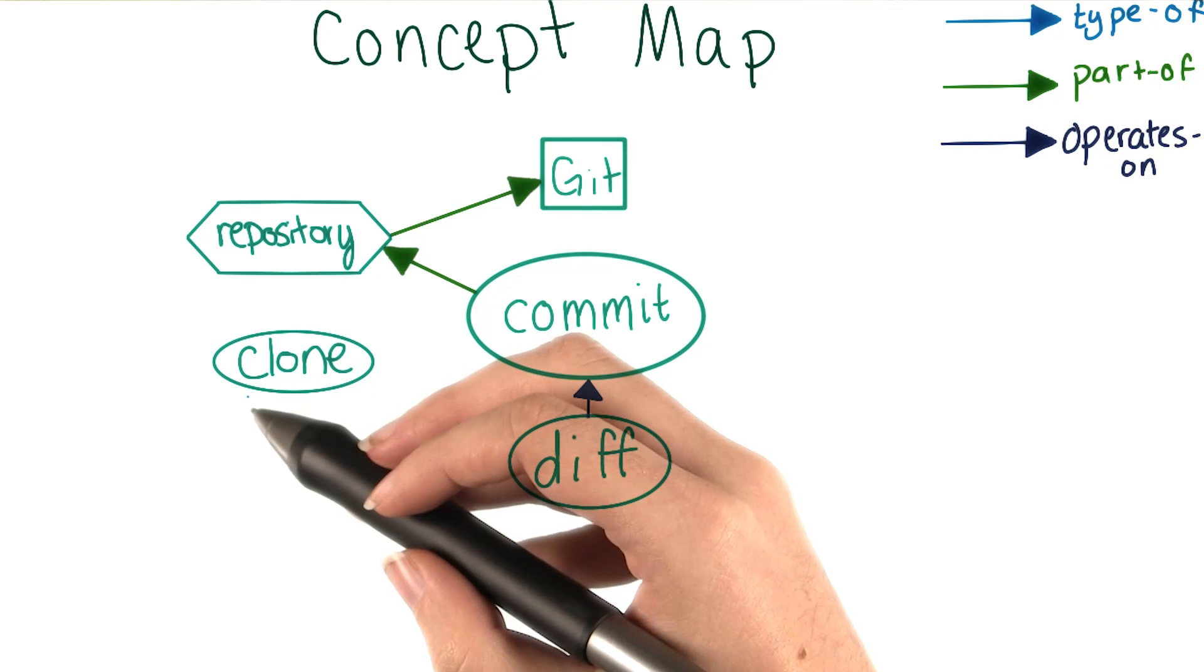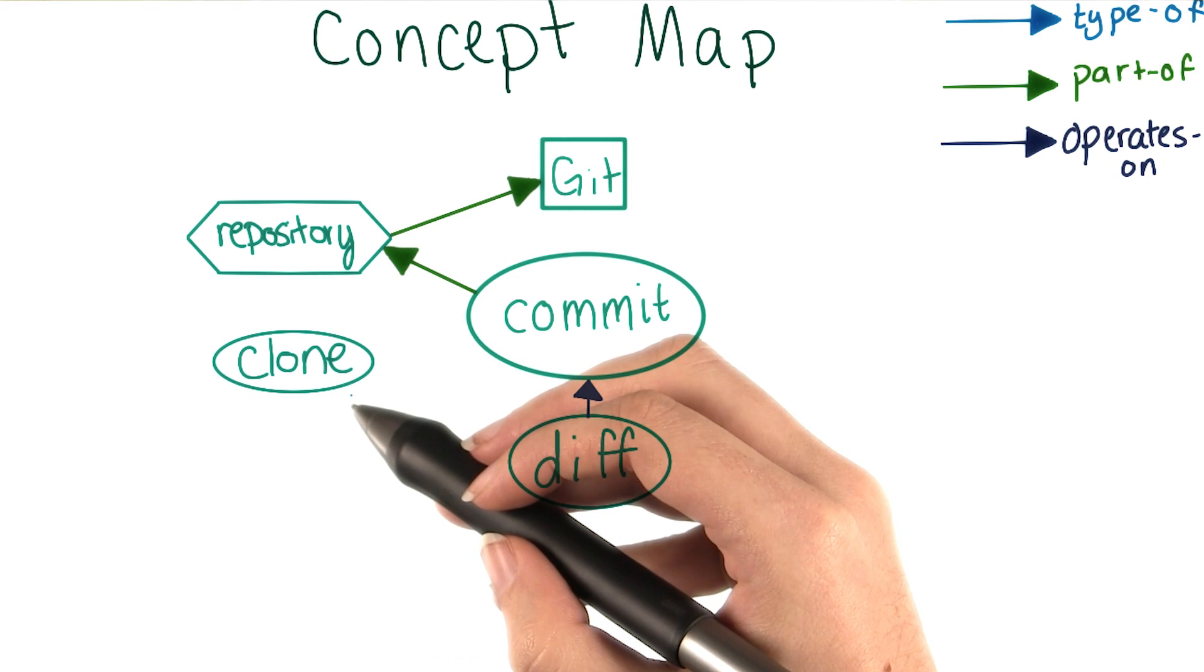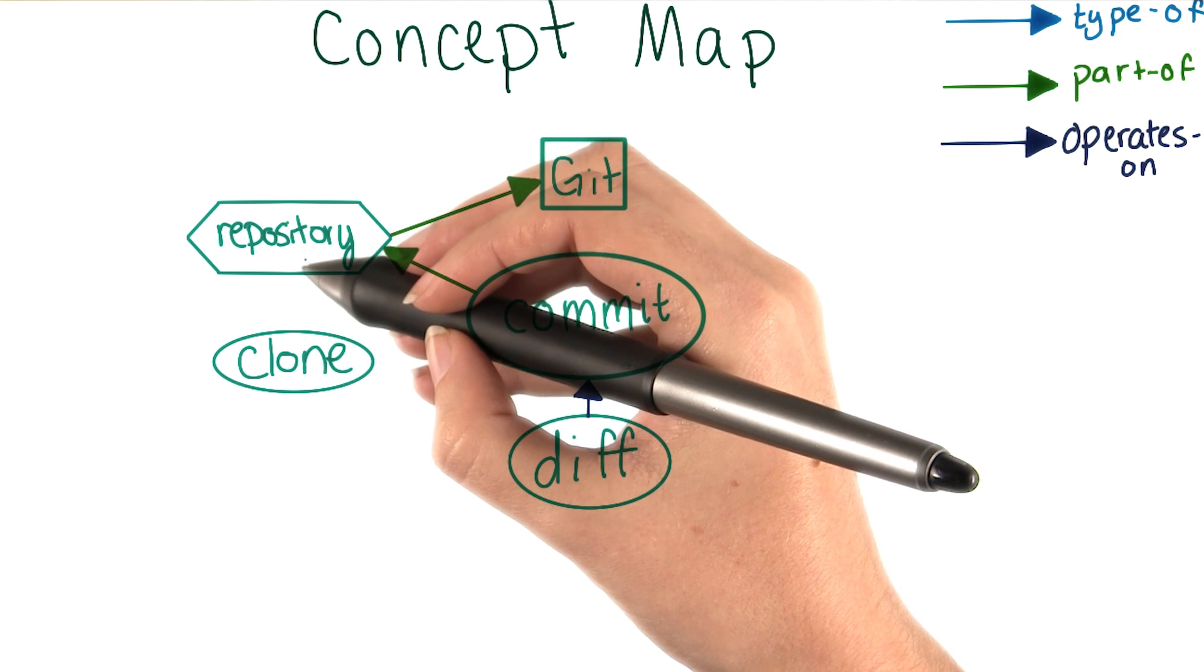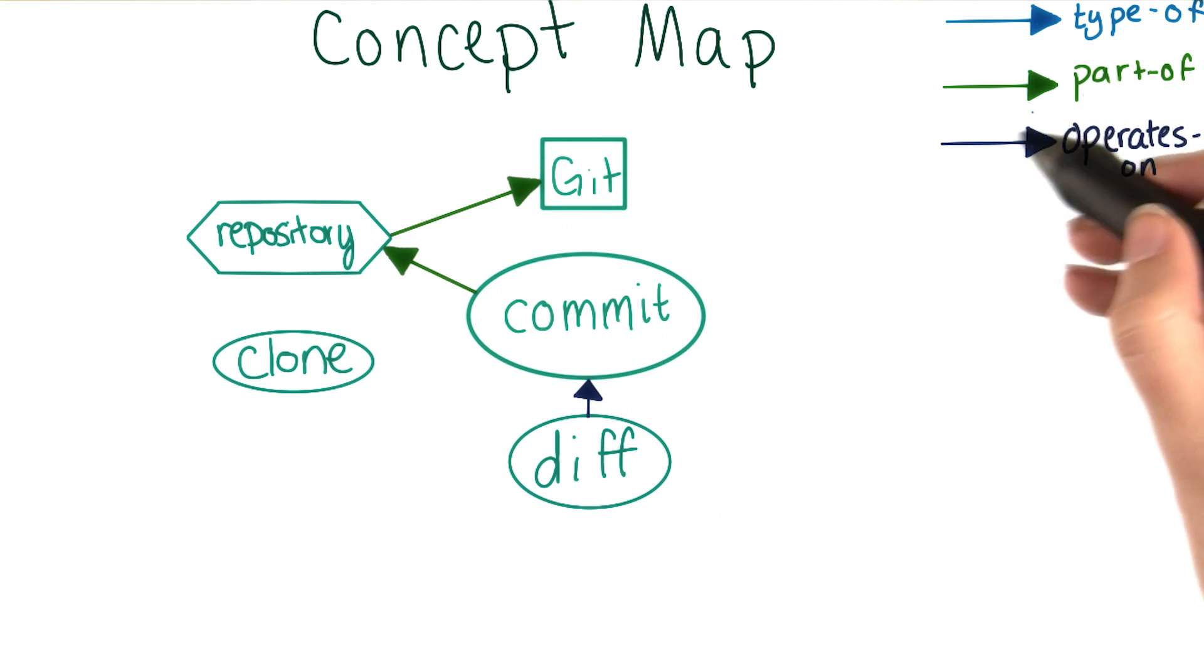Now let's consider clone. Clone takes an existing repository and creates a new one just like it, so it should clearly be connected to repository. Does one of our existing connection types make sense, or should we make a new one? It looks like the 'operates on' connection would work here pretty well.